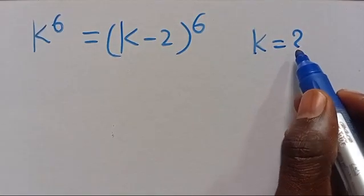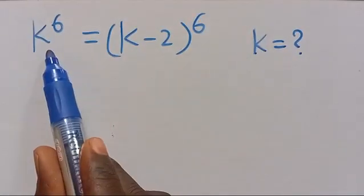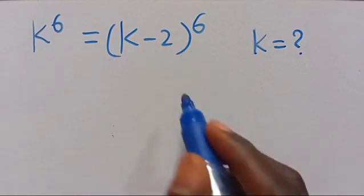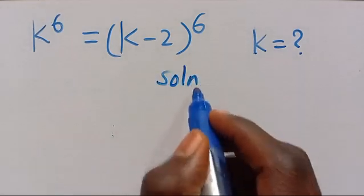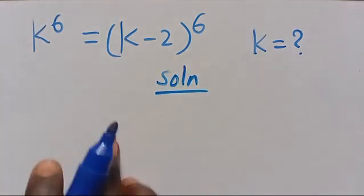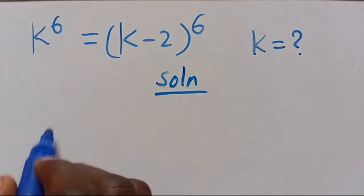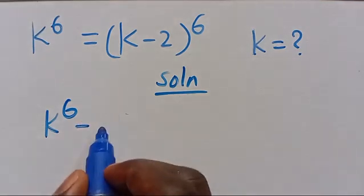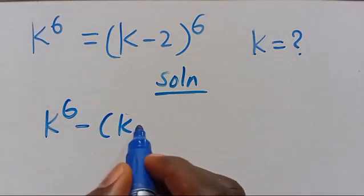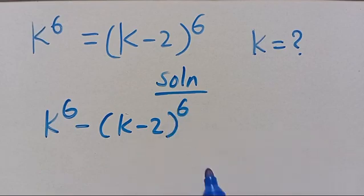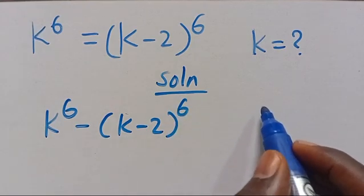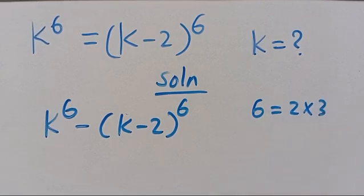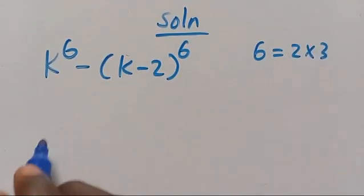What is the value of K given that K to the power of 6 equals open parentheses K minus 2 in parentheses to the power of 6? Let's have this as our solution. From here we have K to the power of 6 minus K minus 2 in parentheses to the power of 6. Note that we can have 6 equals 2 times 3.